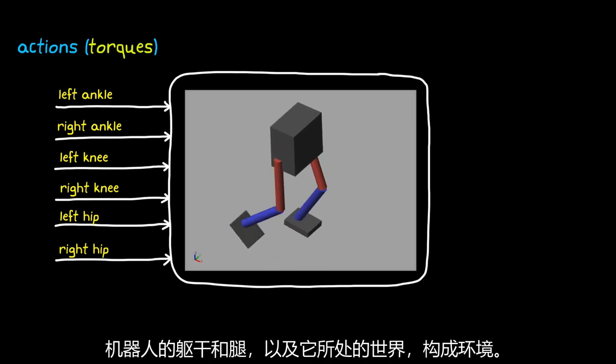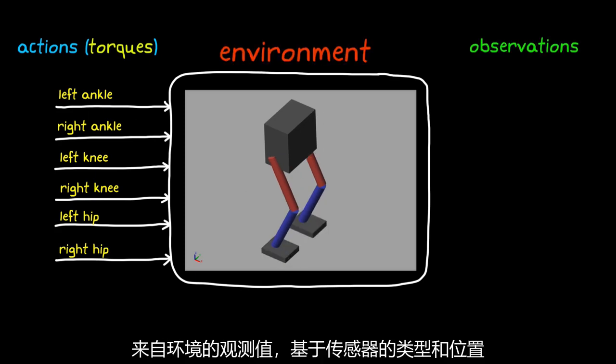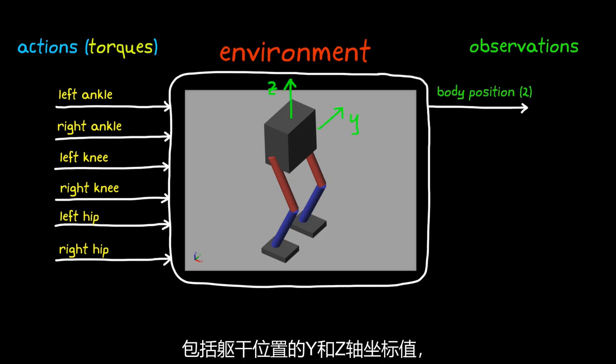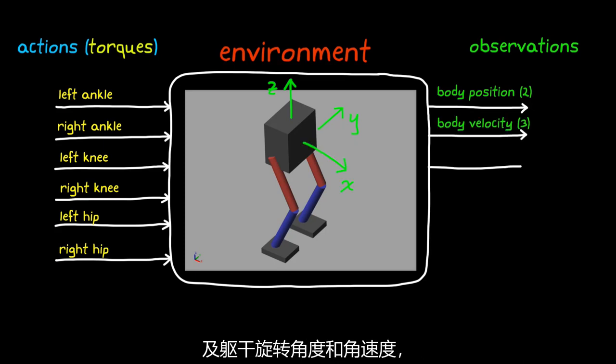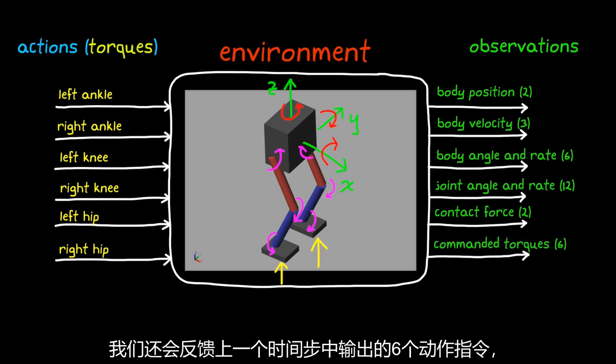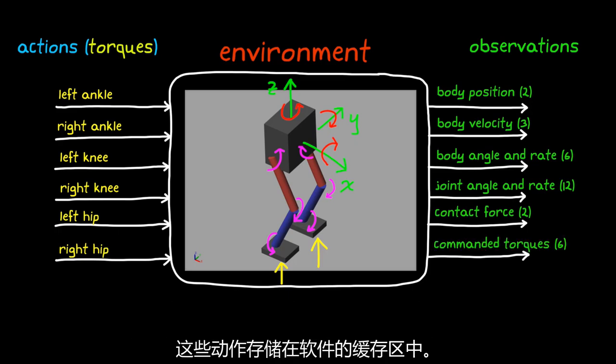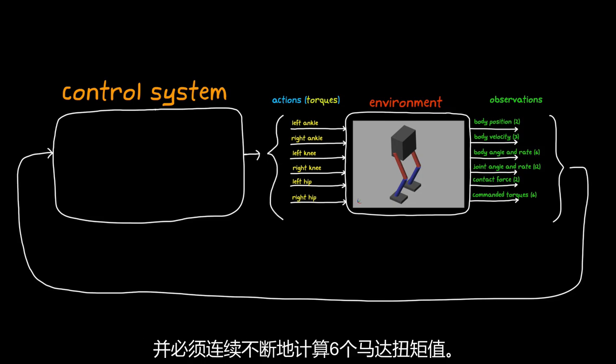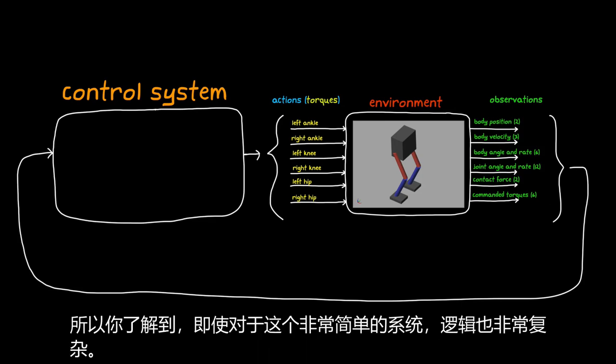Now the robot body and legs, along with the world in which it operates, makes up the environment. The observations from the environment are based on the type and locations of sensors as well as any other data that is generated by the software. For this example we're using 31 different observations. These are the y and z body positions, the x, y, and z body velocity, and the body orientation and angular rate. There are also the angles and angular rates of the six joints, and the contact forces between the feet and the ground. Those are the sensed observations. We're also feeding back the six actions that we commanded in the previous time step, which are stored in a buffer and software. So in all, our control system would need to take in these 31 observations and then calculate the values of the six motor torques continuously. So you can start to see how complex the logic has to be for even this really simple system.